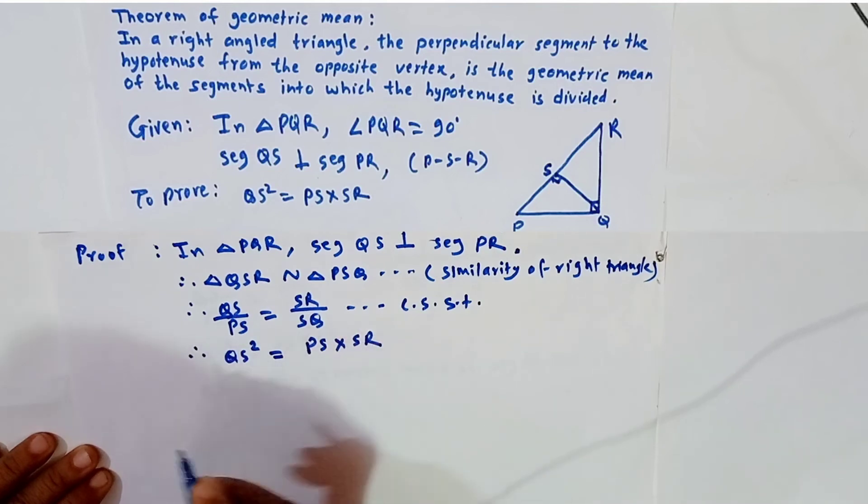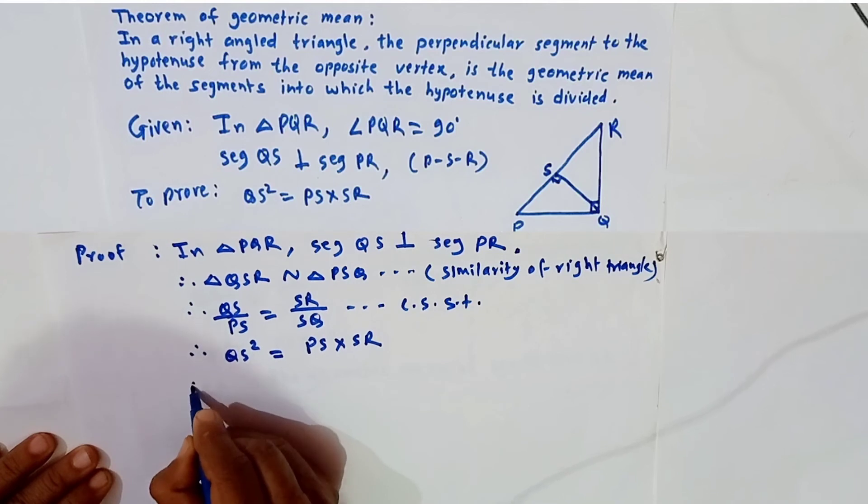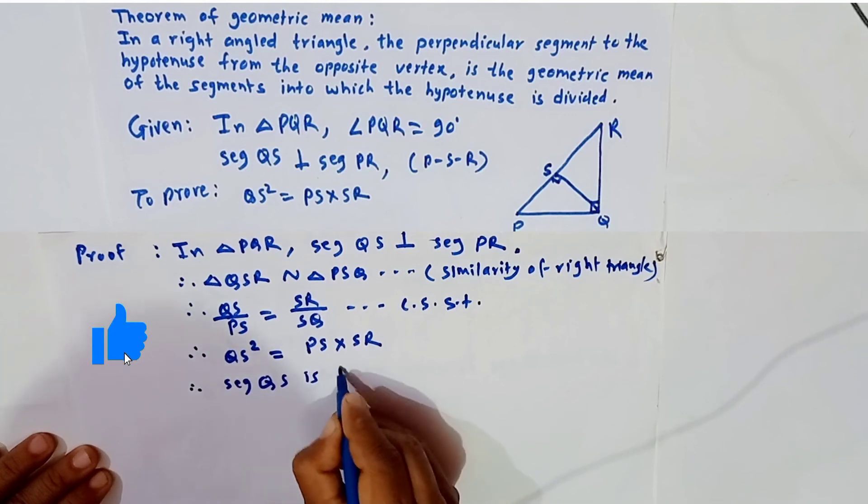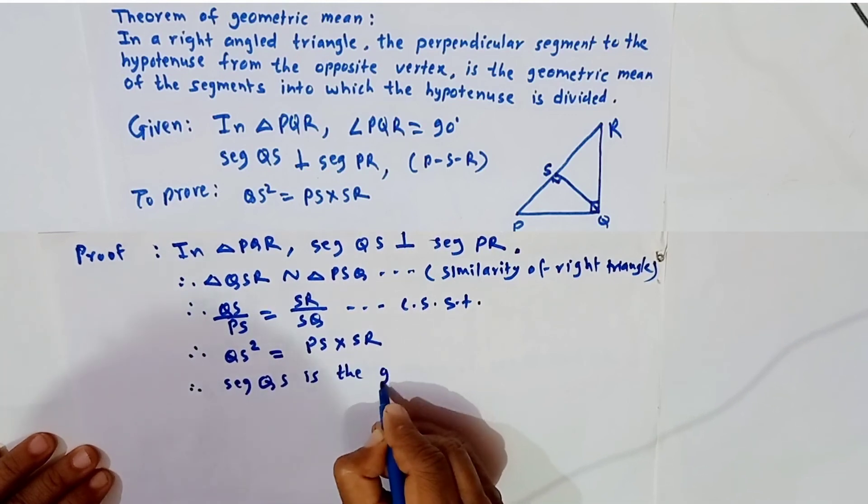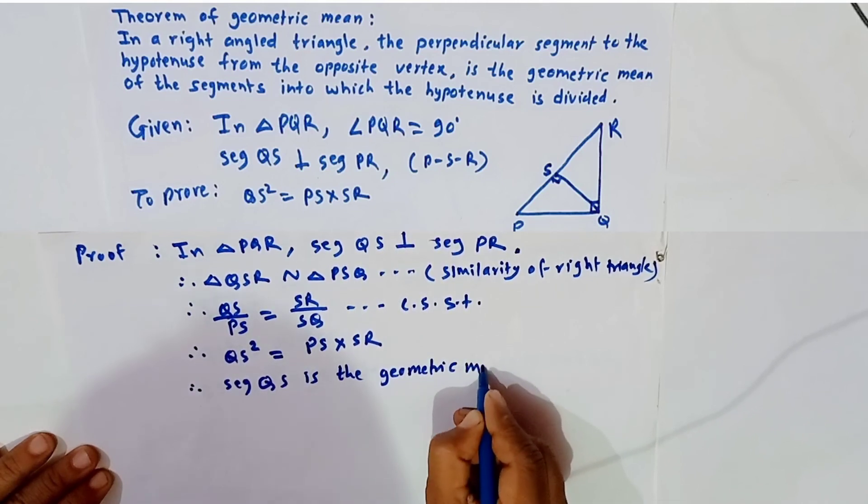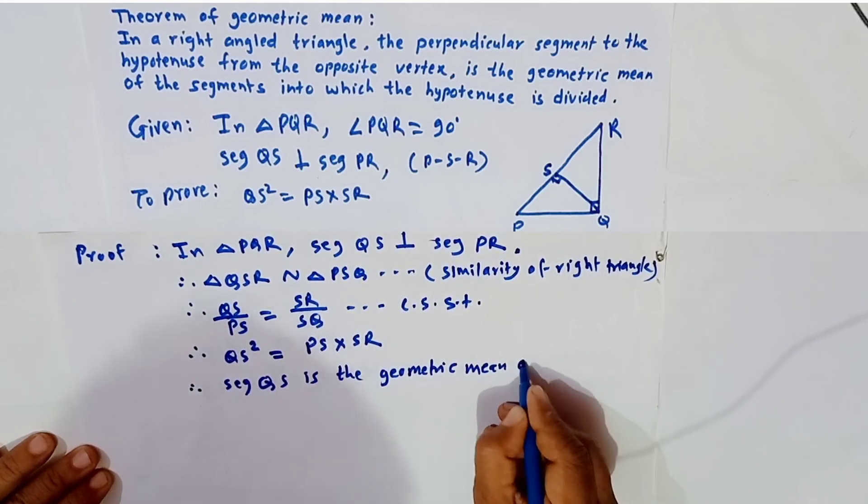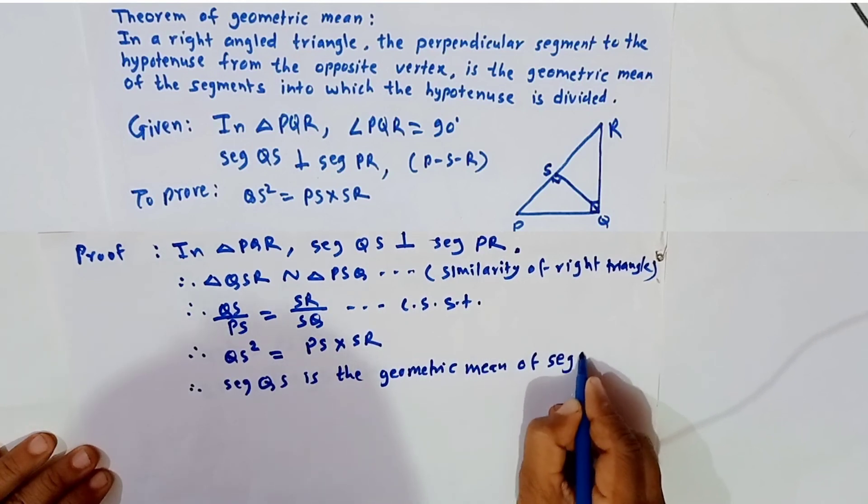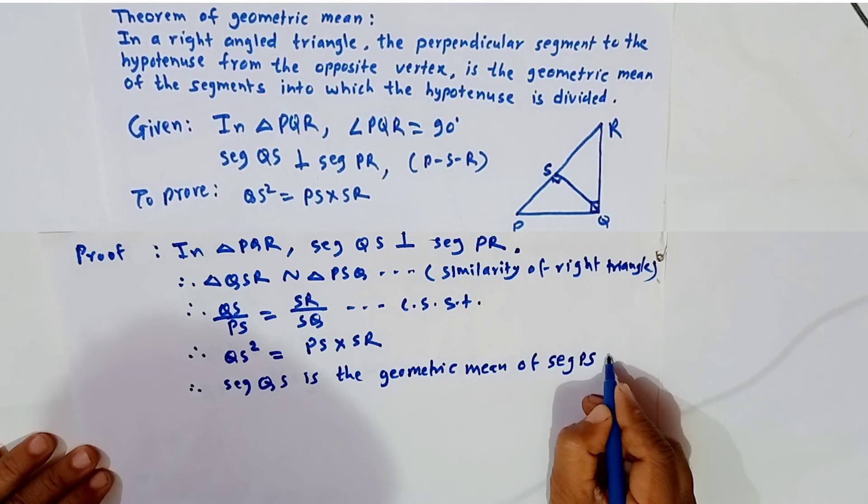And therefore we get to prove this: segment QS is the geometric mean of segment PS and segment SR.